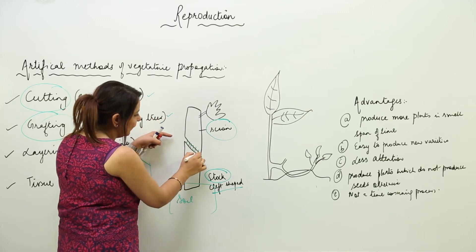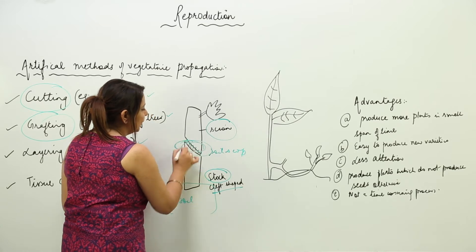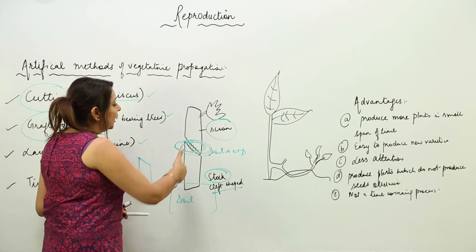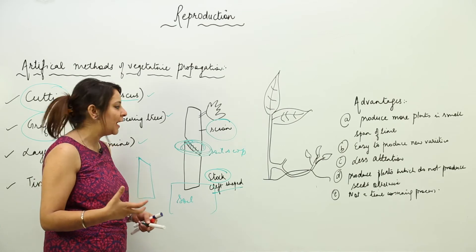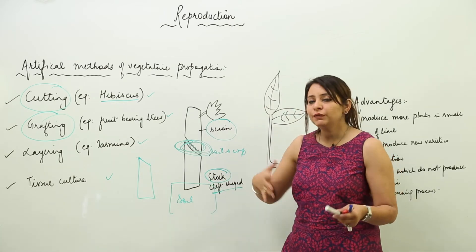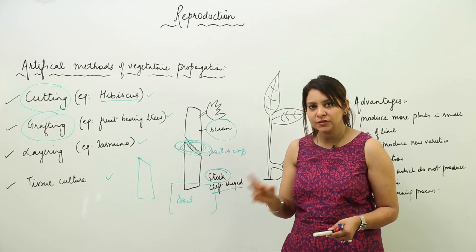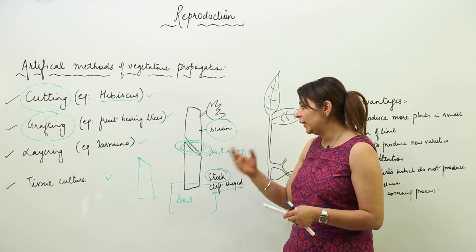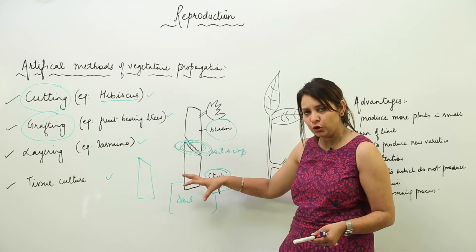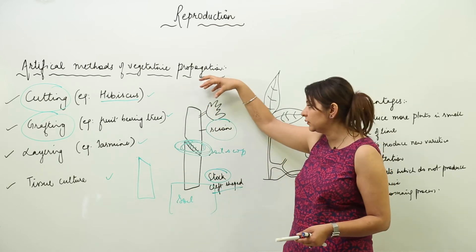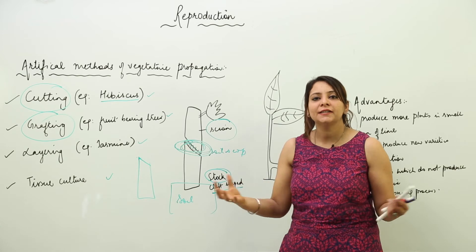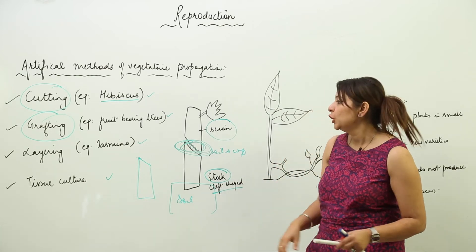The joined area of stock and scion is covered with soil and compost. Over time, the two parts unite to form a single plant and start functioning as one plant. So in grafting, the part fixed in the soil with the oblique cut is the stock, the part brought from above and placed on it is the scion, and after covering with compost and soil they connect and function as one.